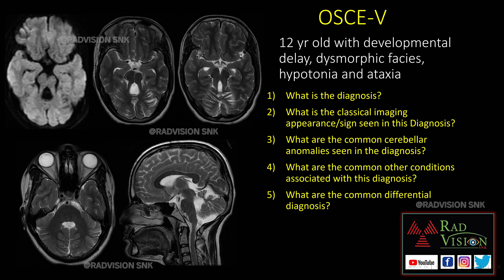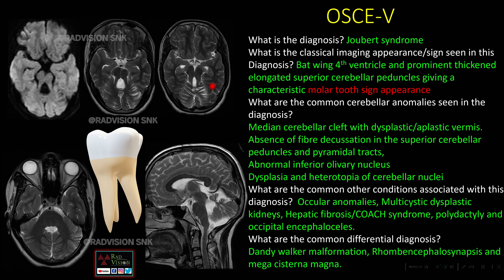Next case — OSCE 5: a two-year-old with developmental delay, dysmorphic facies, hypotonia, and ataxia. This is a classical case of Joubert syndrome. There is a batwing configuration of the fourth ventricle with prominent, thick, and elongated superior cerebellar peduncles giving the classical molar tooth appearance. Common cerebellar anomalies include a median cerebellar cleft, absent or dysplastic vermis, and absence of fiber decussation in the superior cerebellar peduncles.